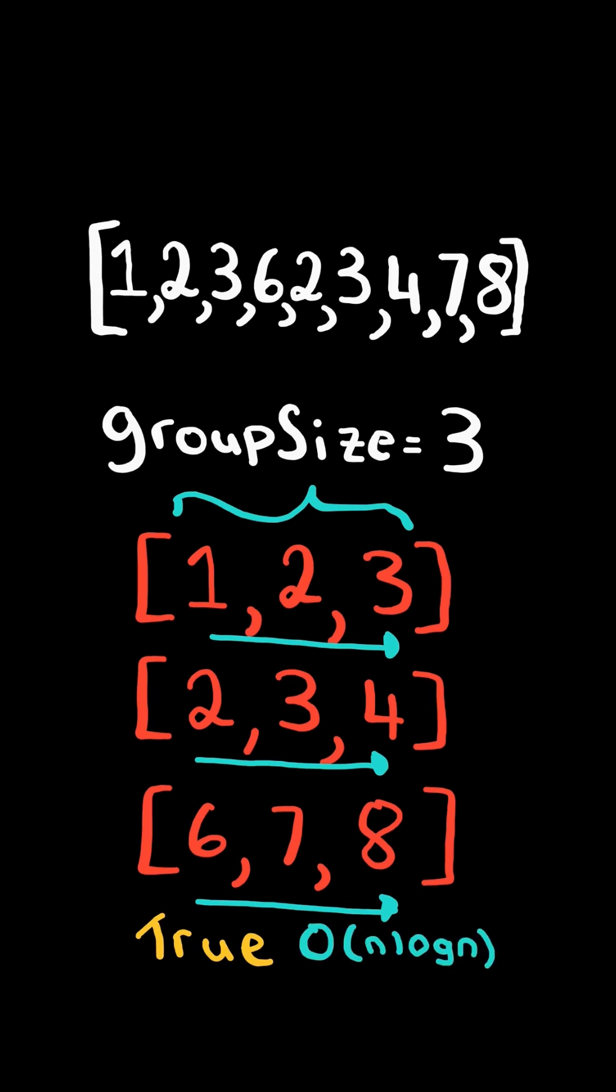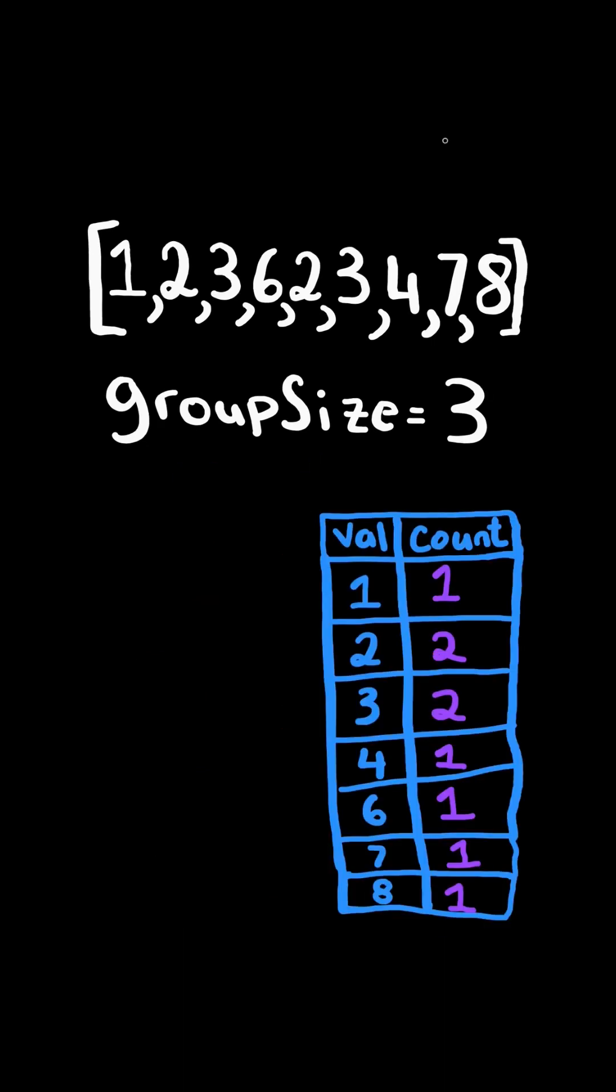We will solve this in O of n log n time. First, we create a frequency dictionary. We start at the minimum one and decrement its count. We then check the next consecutive number and decrement its count, and same for three. Now we created a group of size group size and it contains consecutive numbers.